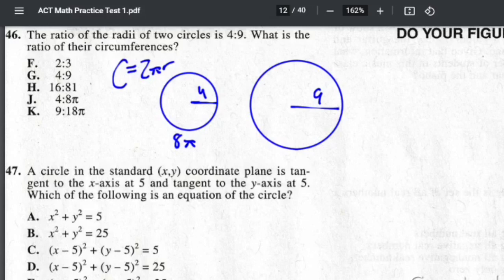And the bigger one will be 18π because the radius is 9 there. So you get 8π to 18π, and you just make the ratio 8π over 18π.